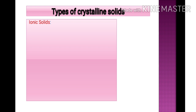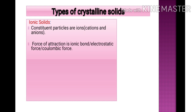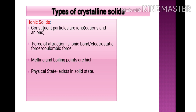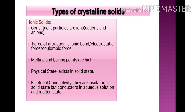Ionic solids have constituent particles that are ions — cations and anions. The force of attraction is the ionic bond, also termed electrostatic or Coulombic force of attraction. Melting and boiling points are very high due to this strong force. They exist as solids at room temperature. They are bad conductors in the solid state but good conductors in aqueous solution and molten state, because in those states the ions are free to conduct electricity. Examples include NaCl, LiF, MgO, zinc sulfide, and calcium fluoride.